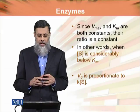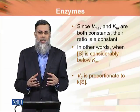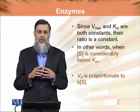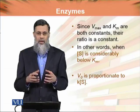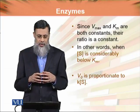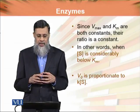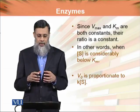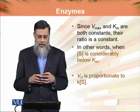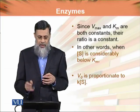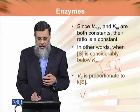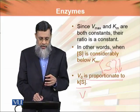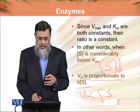Since Vmax and Km are both constants, Km is a constant and Vmax is also a constant (a straight horizontal line above). Their ratio — whether Km/Vmax or Vmax/Km — is also a constant. In other words, when substrate concentration is considerably below Km, V0 is directly proportional to the substrate concentration.